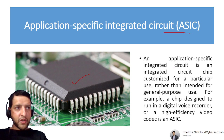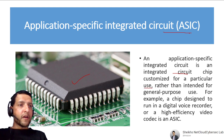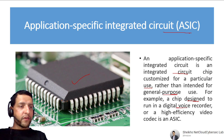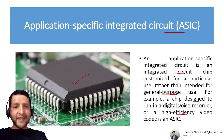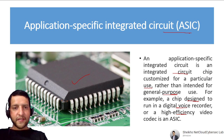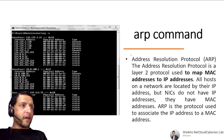Application-Specific Integrated Circuit (ASIC) is a chip specially designed for a specific purpose — customized for a particular use rather than intended for general purpose. For example, a chip designed to run in a digital voice recorder or a high-efficiency video codec is an example of an ASIC.